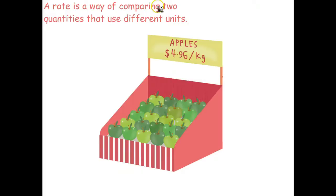A rate is a way of comparing two quantities that use different units. So for example, we've got these apples for sale, and the rate for buying apples is you pay $4.96 per kilogram. So we're actually comparing dollars to kilograms. If the units are different, it's a rate. If the units are the same, we often use a ratio.